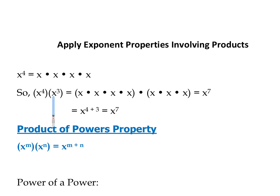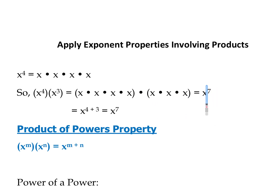So let's look at x to the 4th times x to the 3rd. x to the 4th would be 4 x's multiplied together, x to the 3rd would be 3 x's multiplied together. We have a string of 7 x's being multiplied together, which is the same as x to the 7th. When we multiply like bases, we add the exponents. So x to the 4th times x to the 3rd is x to the 4 plus 3, x to the 7th.